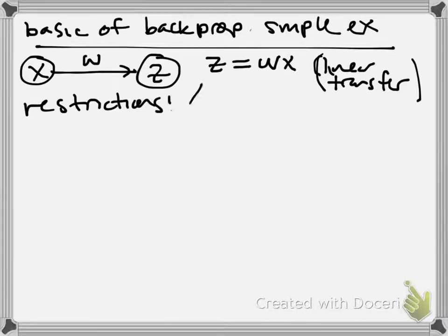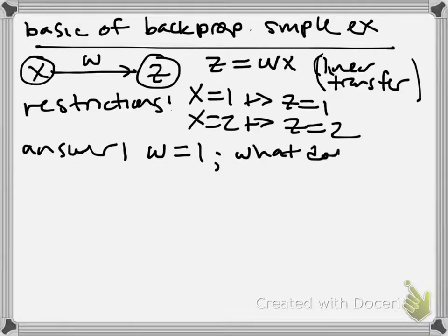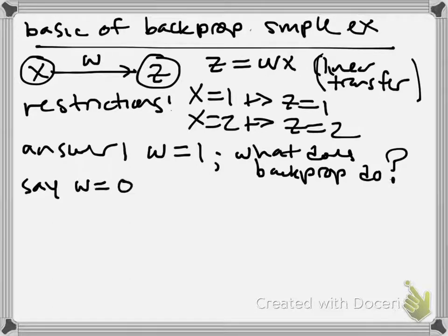And this is our desired restrictions, I'll call them. We'll say that x equals 1, we want that to imply that z equals 1, x equals 2, we want that to imply that z equals 2. Well, we know how we would want to solve this. The answer, really, is that we would like w to be equal to 1, and then both of those restrictions will hold. But we're not going to jump to that conclusion. We're going to say, what does backpropagation do in this situation?